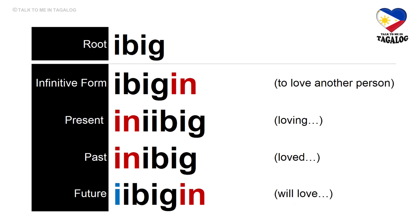Root word: ibig. Infinitive form: ibigin — meaning to love another person. Present tense: iniibig — loving another person. Past tense: inibig — loved someone. Future tense: ibigin — will love someone.